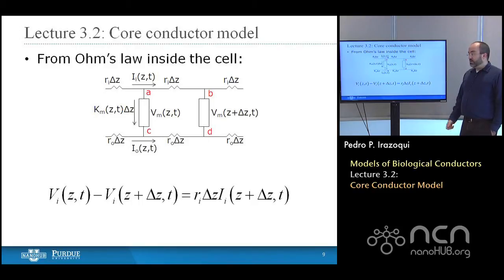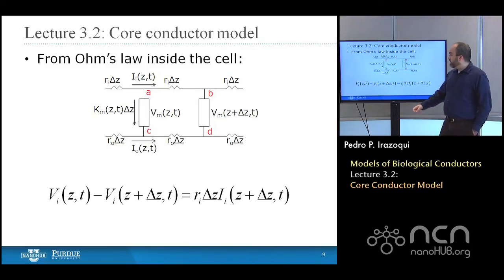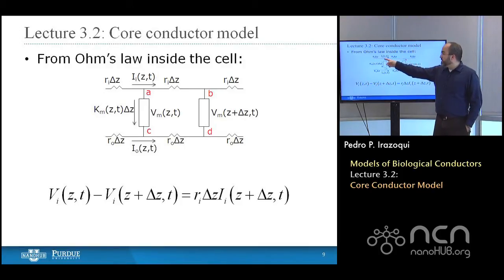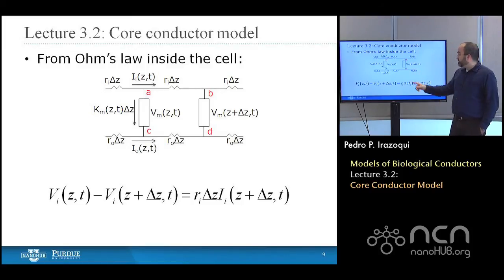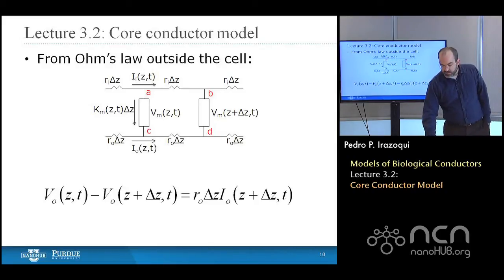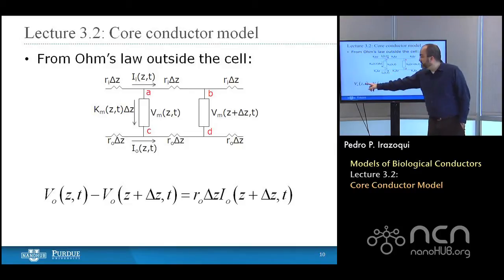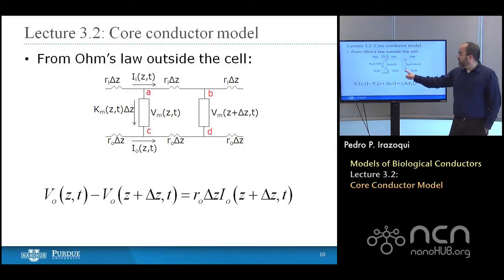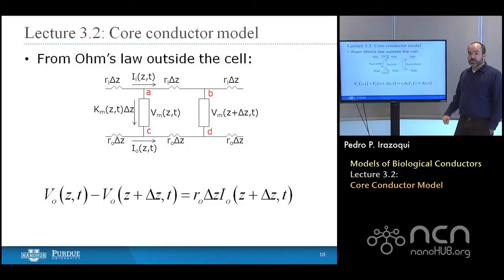From Ohm's law inside the cell — voltage equals current times resistance — the voltage inside the cell, V_I at Z and T minus V_I at Z plus delta Z and T, equals R_I times delta Z times I sub I evaluated at Z plus delta Z and T. Outside the cell: V_O at Z and T minus V_O at Z plus delta Z and T equals R_O times delta Z times I_O evaluated at Z plus delta Z and T.